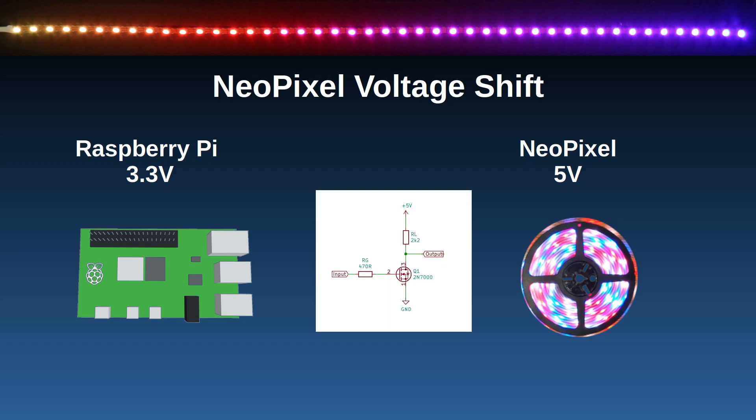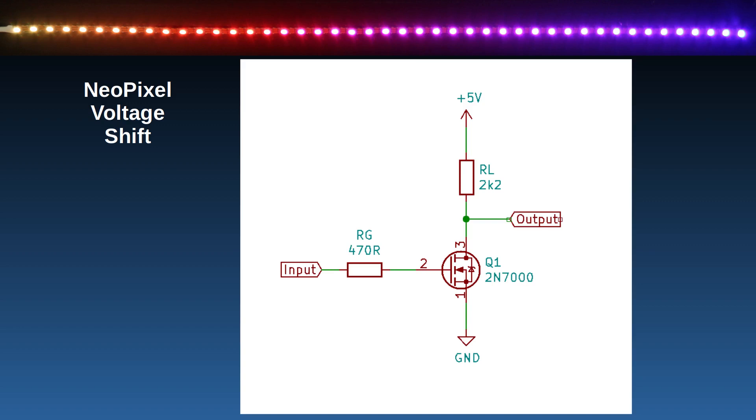This is the schematic diagram I'm going to use. Again, I'm using KiCAD to create the diagram. This is known as an inverting circuit, as the output will be the opposite of the input. Let's zoom in and take a closer look. The input shown on the left is where the 3.3 volt logic of the Raspberry Pi GPIO enters, and the output goes to the data in of the NeoPixel.